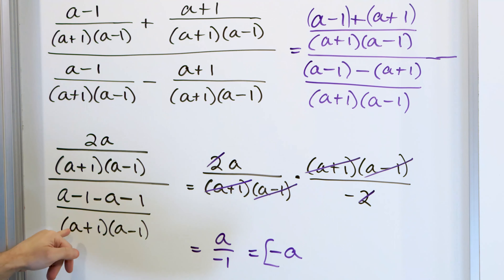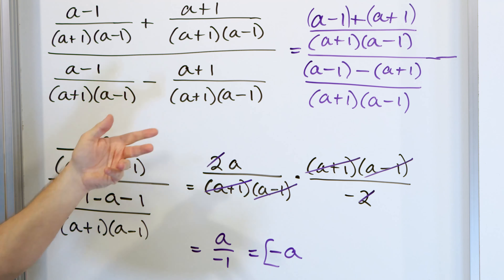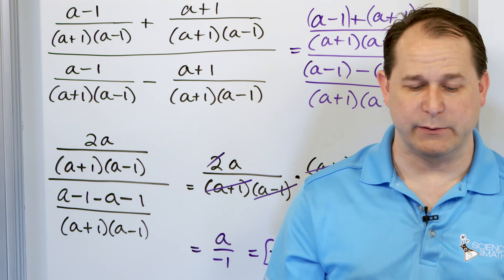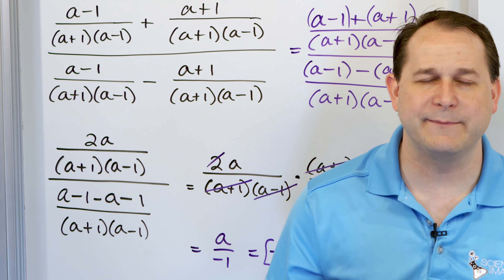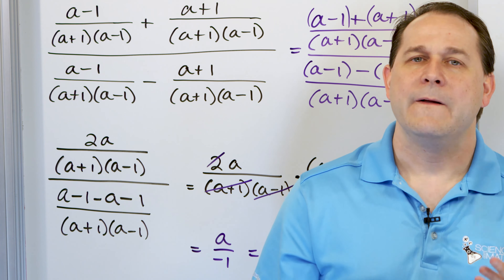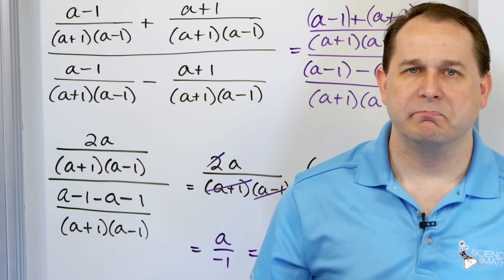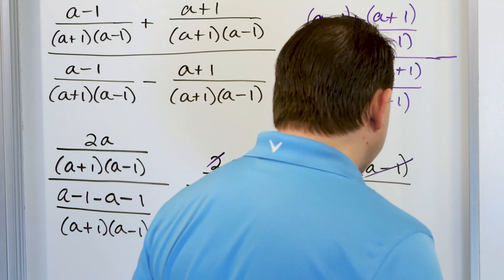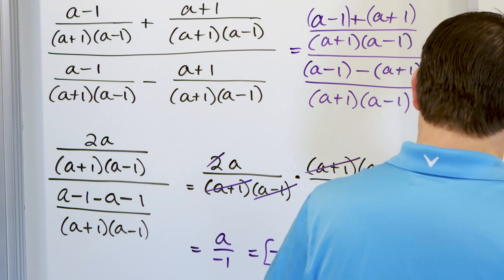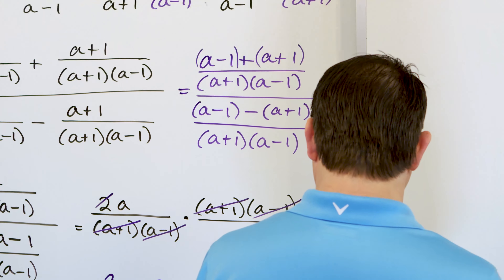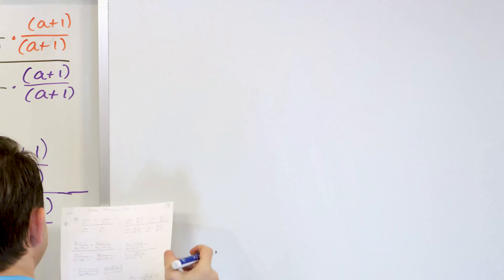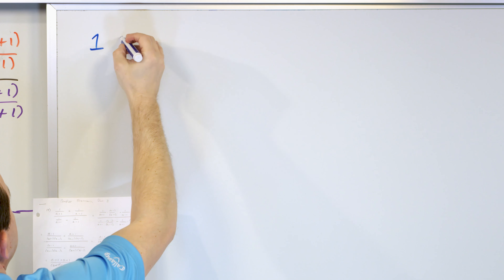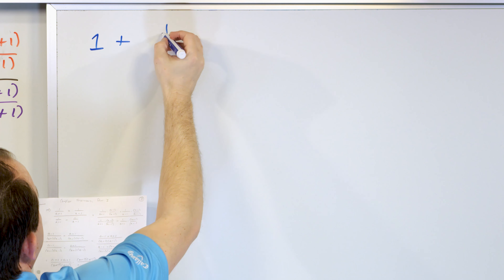All of that work just to get to the answer: negative a. But notice that even though it was difficult, the same process applied — find a common denominator, get the numerators correct, do the subtraction, keep the common denominators, then flip, multiply, and cancel. I told you exactly that in the beginning of the lesson. It was all going to be the same song and dance, just with more tedium.